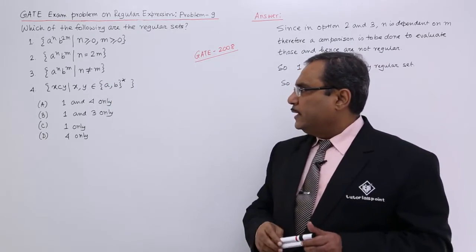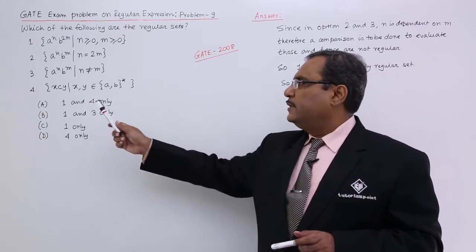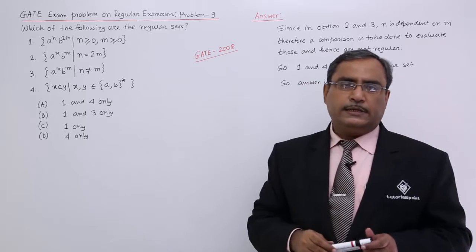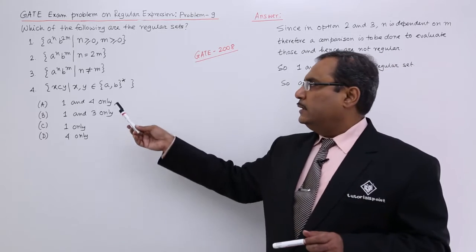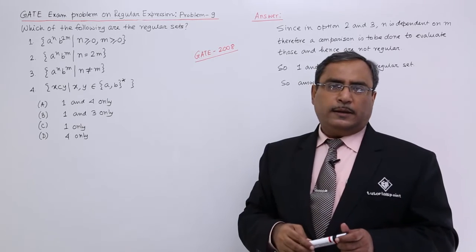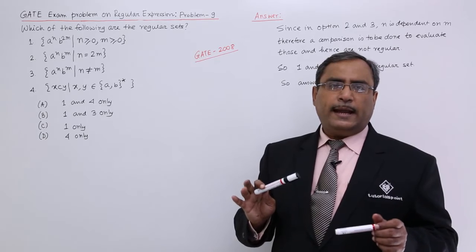But consider the last one, here we are having xcy, c is written in the lower case that means it is already a terminal. But what about x and y? They are nothing but they belong to {a,b}*. That means, they can be epsilon or any possible combinations of a and b.